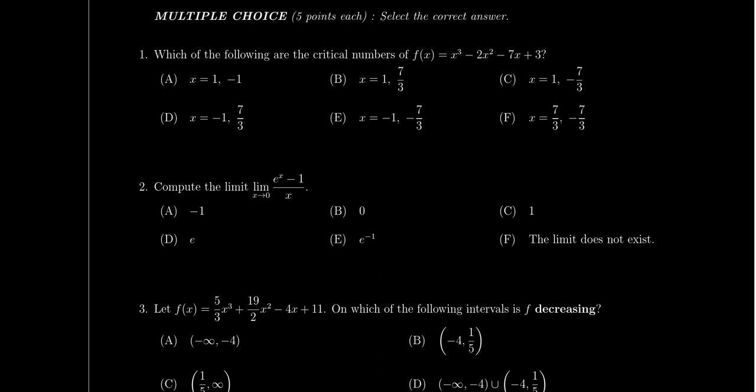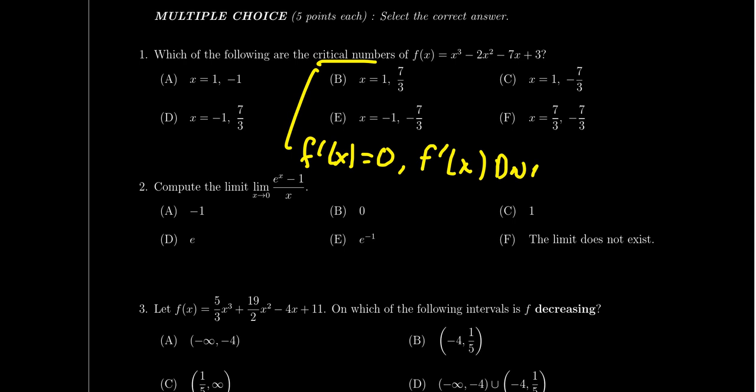Question number one will give you a question about critical numbers. A critical number is a number in the domain of the function that makes the derivative equal to zero, or makes the derivative undefined. Critical numbers are important for optimization, monotonicity, and concavity. For practice, consult lecture 31. Basically, you'll calculate a derivative using the power rule, product rule, quotient rule, or chain rule, and then apply it to find these critical numbers.